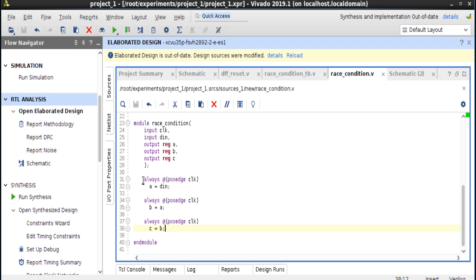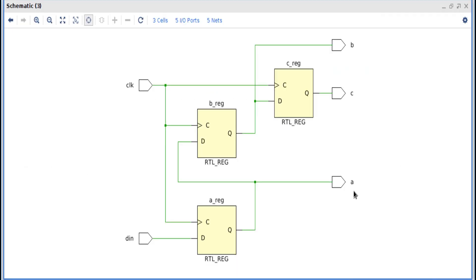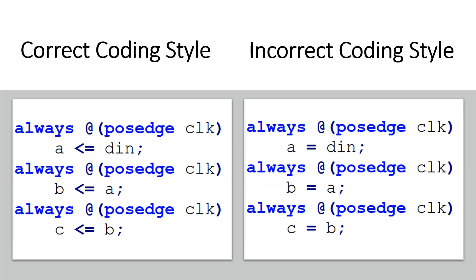Now let us see the logic synthesis results when I am using the incorrect coding style — that is, blocking assignments. Let me press schematic. You see, it is also yielding the same results. You will not be able to find even a single difference. So the synthesizer gives the same results whether I am using blocking assignments or non-blocking assignments.